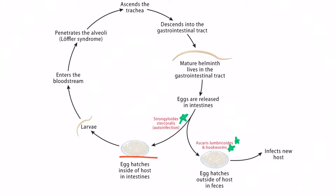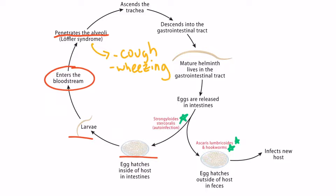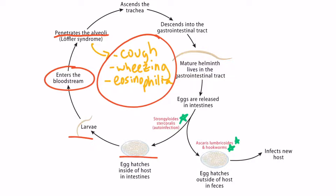Eggs or larvae enter the host — through fecal-oral transmission or through the skin, depending on the specific parasite. In the case of Ascaris lumbricoides, eggs or larvae are ingested and then enter the gastrointestinal tract. Regardless of how the parasite enters the host, eventually these pathogens can enter the bloodstream, disseminate to the lungs, and penetrate the alveoli. Once in the lungs, they can cause pulmonary symptoms including cough and wheezing. At the same time, a peripheral blood smear may reveal eosinophilia, and these transient findings are termed Loeffler syndrome.